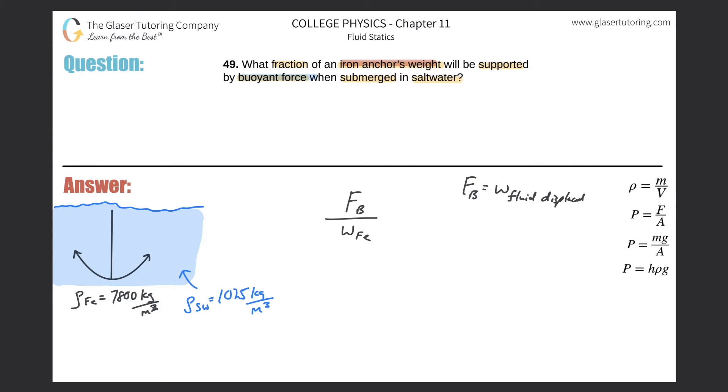Taking this fraction, I'm going to write that we have this equal to the weight of the fluid displaced. What's the fluid displaced in this problem? It's just water. So it's the weight of the water displaced divided by the weight of the iron.